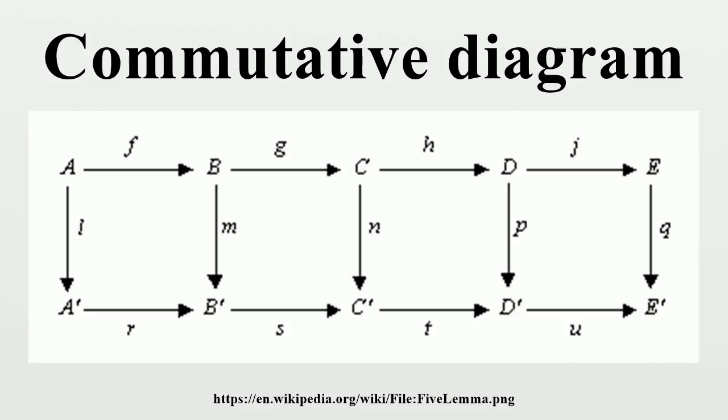Conversely, given a commutative diagram, it defines a poset category. The objects are the nodes. There is a morphism between any two objects if and only if there is a path between the nodes.